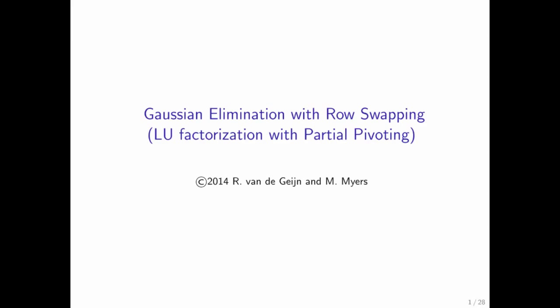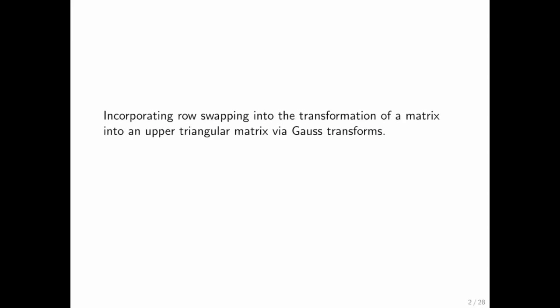Now that we have introduced pivot matrices, we can incorporate those into LU factorization to create an algorithm known as LU factorization with partial pivoting, which is the same thing as Gaussian elimination with row swapping.